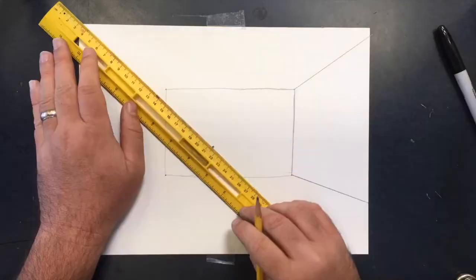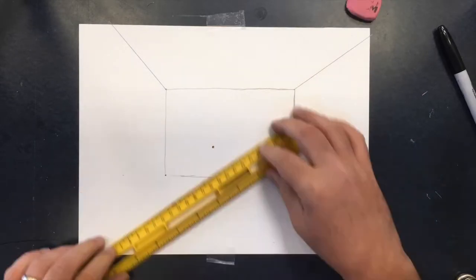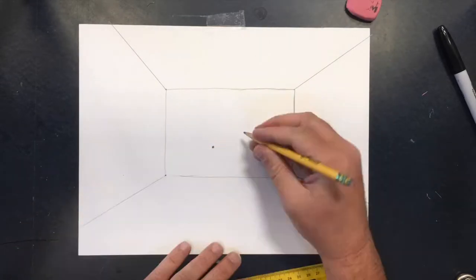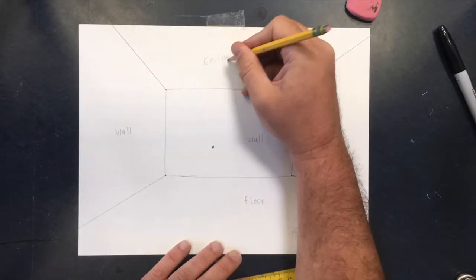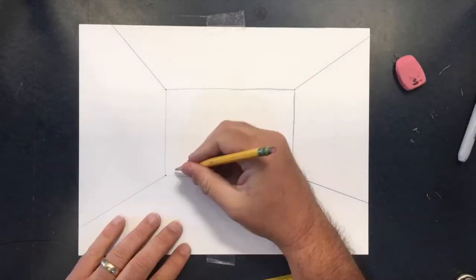And you will need a ruler for this project. Use it first to connect the corners of the rectangle to the vanishing point. Draw away from each corner to create the walls, the floor, and the ceiling. Make sure your ruler is touching the dot and the corners of the room before you draw or the lines aren't going to work for you.